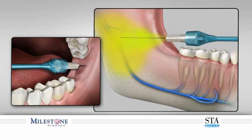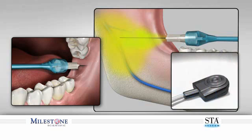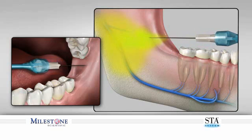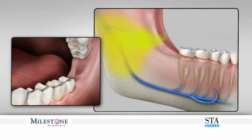To avoid anesthetic solution spray back into the patient's mouth, perform the following. While the needle is still embedded in the patient's tissues, depress and release the foot control pedal. Count three beeps after releasing the foot control, then totally remove the needle from within the patient's mouth. Direct the needle away from the patient, as a small amount of anesthetic solution may still be present.